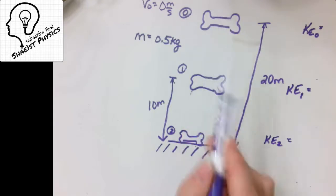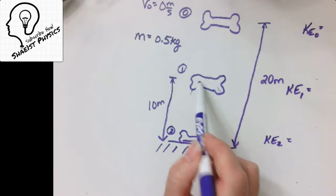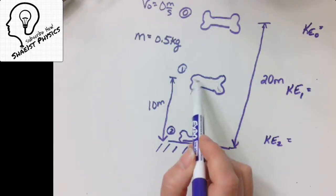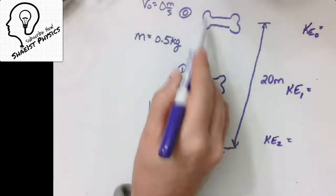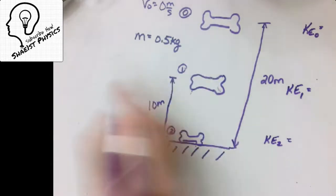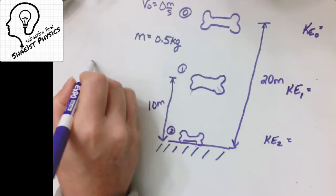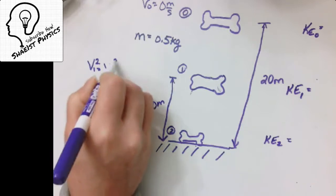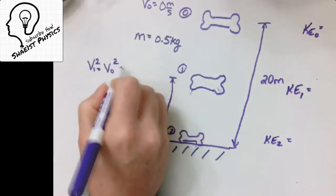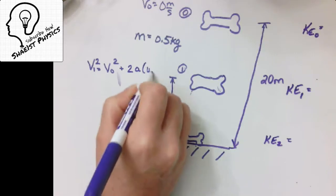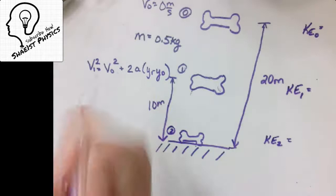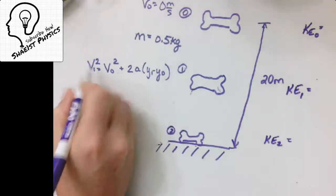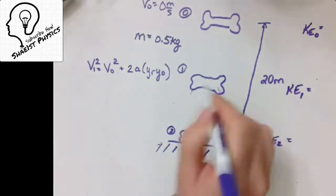What would the velocity be at the halfway point? This is a throwback to projectile motion. To find the velocity there, I know how far the bone dropped and I know the acceleration on Earth. So I'll use the kinematic equation v² = v₀² + 2a(x − x₀) — I'm choosing this one because it does not have time in it, and I don't know the time.